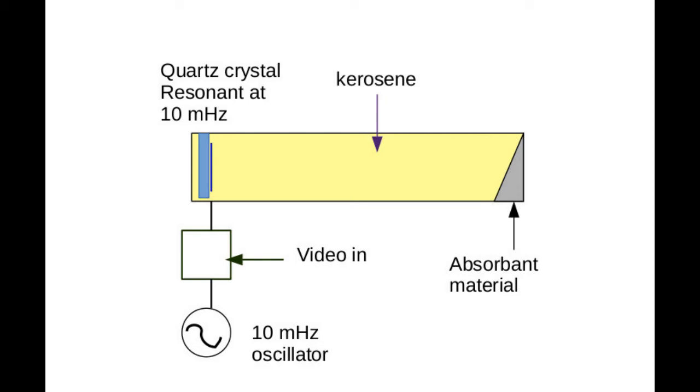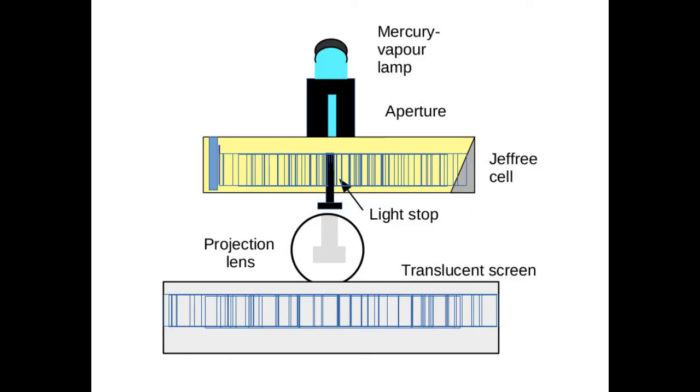In my second sketch I show the details of the optical system. For clarity I have omitted the cylindrical lenses. The aperture is flooded by light from the mercury lamp. Light spreads by refraction into the cell.